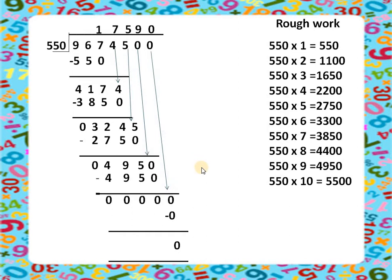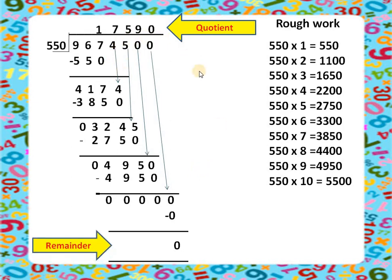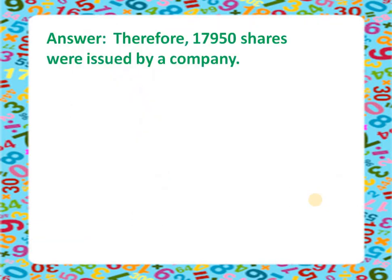Now we label the result: the quotient is 17590 and the remainder is 0. We frame the answer in a sentence: Therefore, 17590 shares were issued by the company. This was what was asked at the beginning. Please practice this question — don't just do it orally. Now let's look at another question from the same exercise.